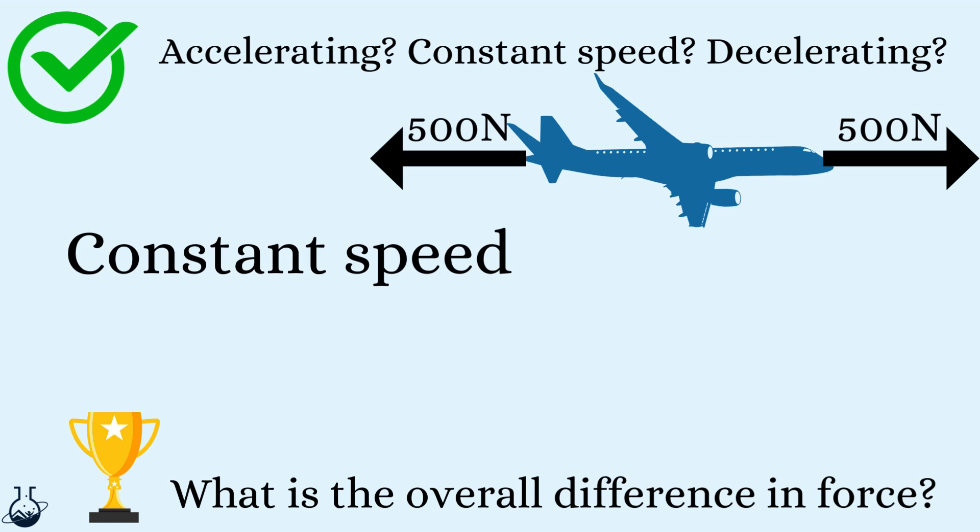This plane is moving at a constant speed. We can see this because thrust and air resistance are in balance. We will know when something is in balance because the resultant force is 0 newtons.